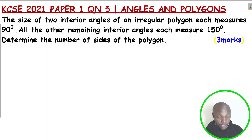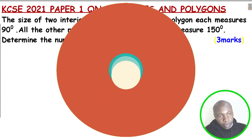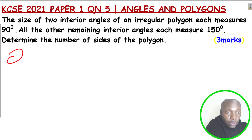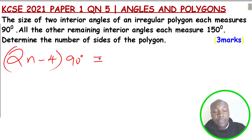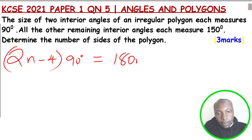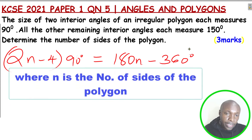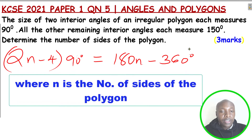Before you solve this question, there is something we need to understand: how do we get the sum of interior angles of any regular or irregular polygon. The sum of interior angles of an irregular or regular polygon is given by 2n minus 4 right angles. You can simplify this by opening the brackets — it will be 180n subtract 360 degrees. This is how we get the sum of interior angles, and it applies to either irregular or regular polygons.